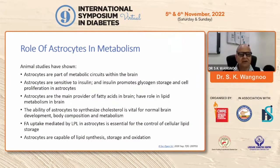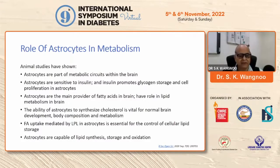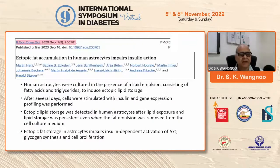Recently there has been a lot of interest generated in the role of astrocytes in brain metabolism. Though these are animal studies, it is exciting to know that astrocytes are part of the metabolic circuits within the brain. Astrocytes are associated with insulin, and insulin promotes glycogen storage and cell proliferation in astrocytes. Astrocytes are the main provider of fatty acids in the brain and play a role in lipid metabolism. The ability of astrocytes to synthesize cholesterol is vital for normal brain development, body composition, and metabolism. Fatty acid uptake mediated by lipoprotein lipase (LPL) in astrocytes is essential for the control of cellular lipid storage. Astrocytes are also capable of lipid synthesis, storage, and secretion.